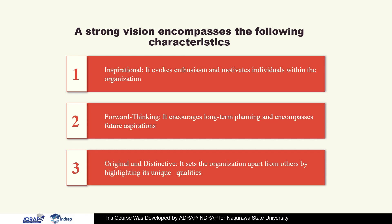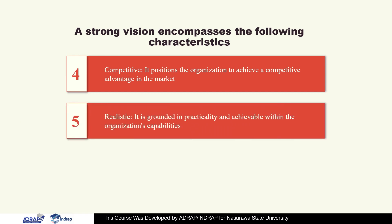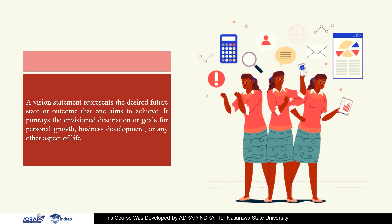Four, competitiveness — it positions the organization to achieve a competitive advantage in the market. Five, realistic — it is grounded in a practical and achievable manner. A vision statement represents the desired future state or outcome that one aims to achieve, portraying what we intend to achieve within the environment by enabling us to have our goals for growth, business development, or any aspect of life.